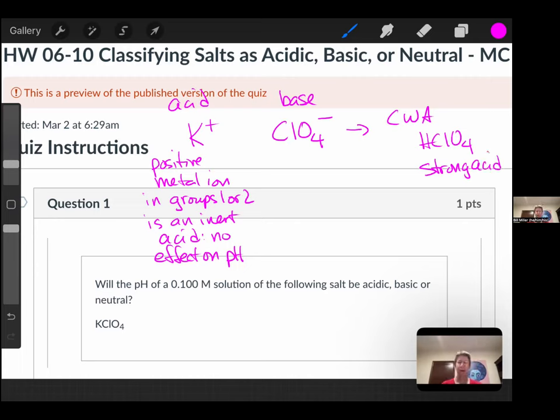And strong acids have inert conjugate bases. So inert means no effect on pH. And that means that since neither ion has any effect on pH, this is going to be a neutral solution.